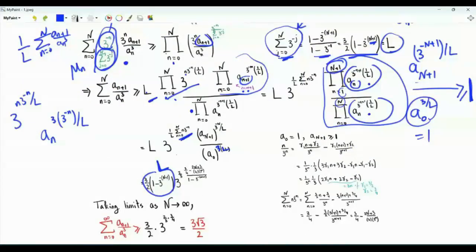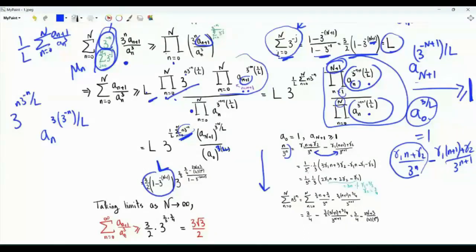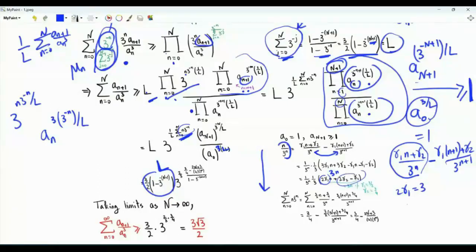Since a_0 equals 1 and the sequence is increasing, a_{n+1} is greater than or equal to 1, so this ratio is lower bounded by 1. The lower bound on the sum is l times the product from n equals 0 to N of 3 to the n times 3 to the minus n divided by l. To evaluate the product involving the sum of n over 3 to the n, we make the sum telescopic. The summand is n over 3 to the n. We write it as gamma_1 times n plus gamma_2 over 3 to the n minus the same function with n replaced by n+1.